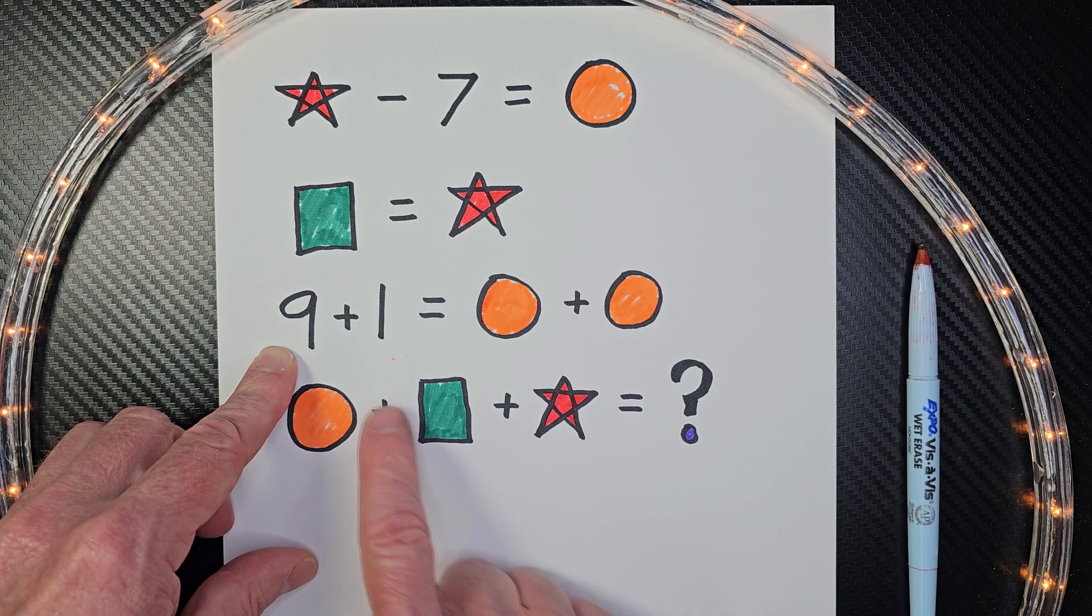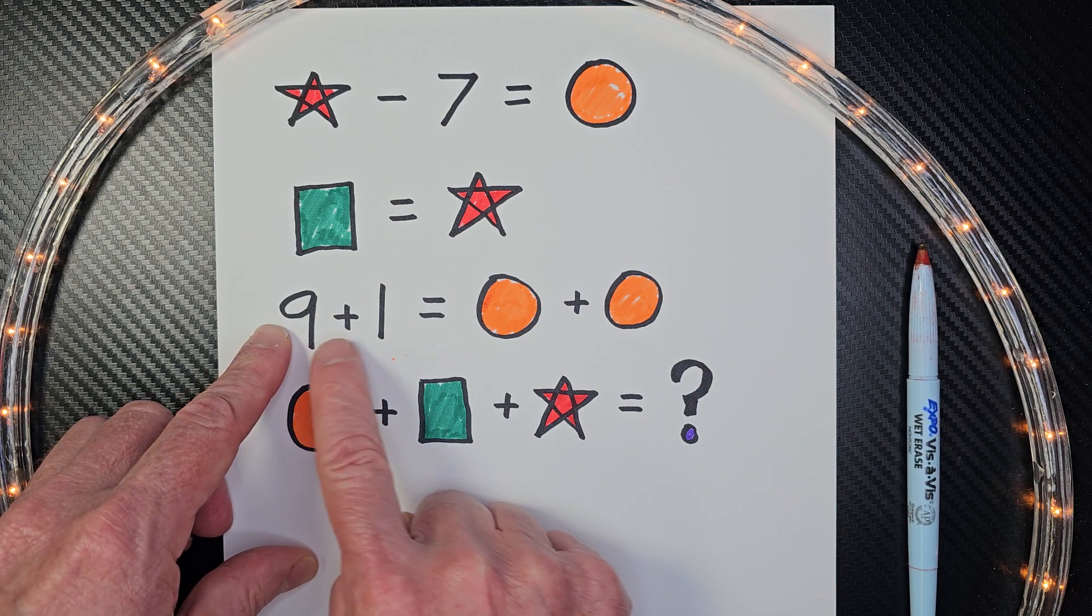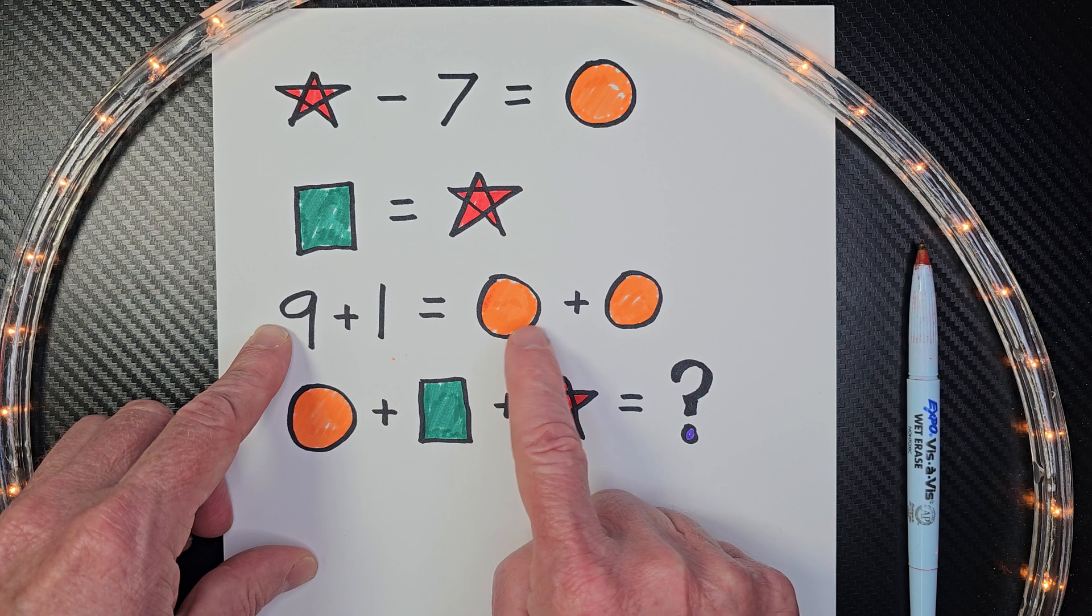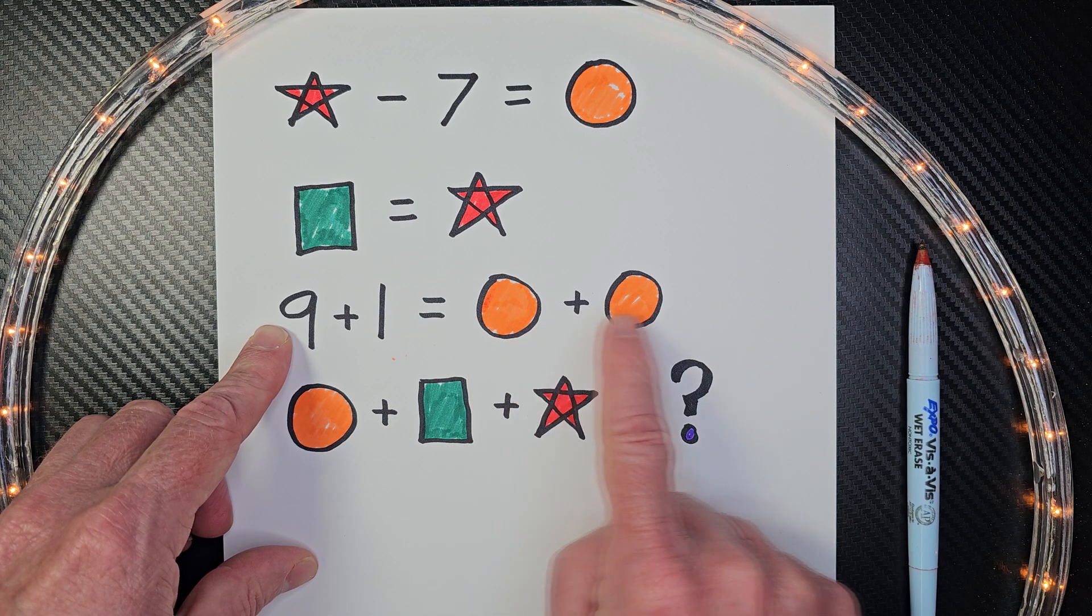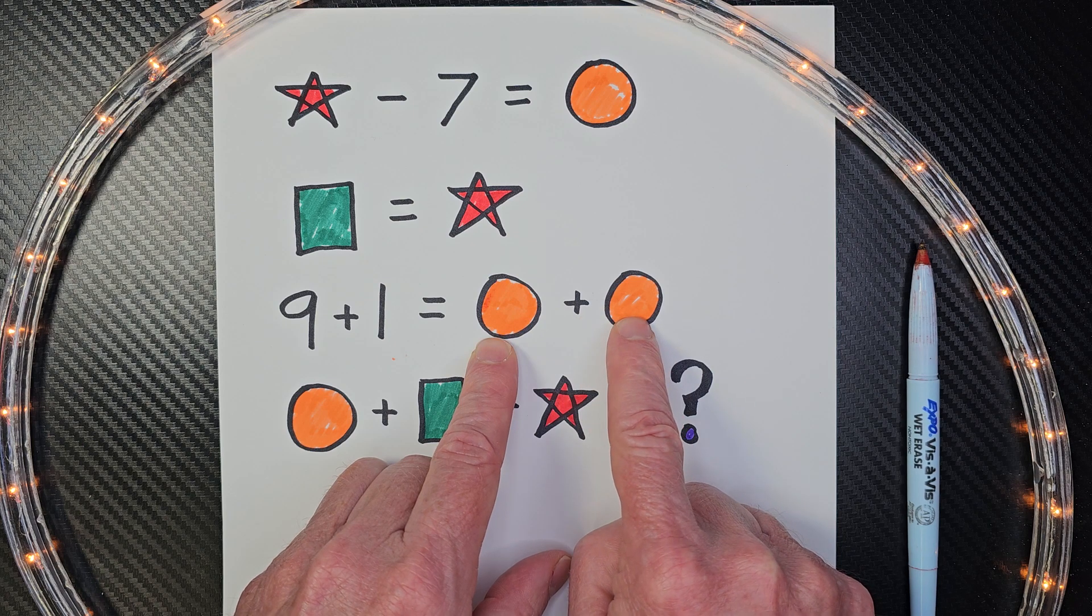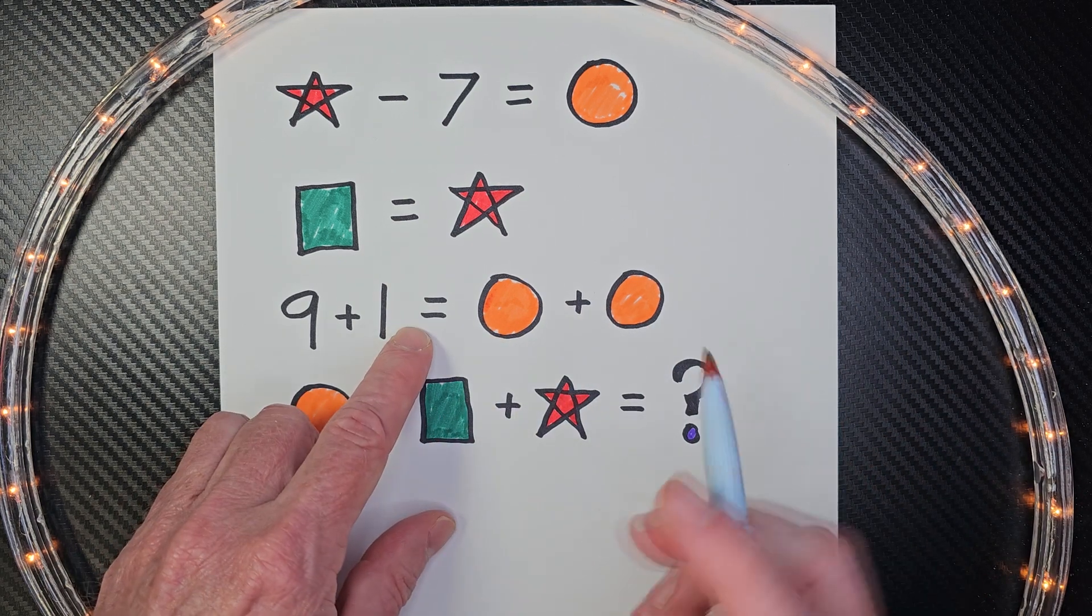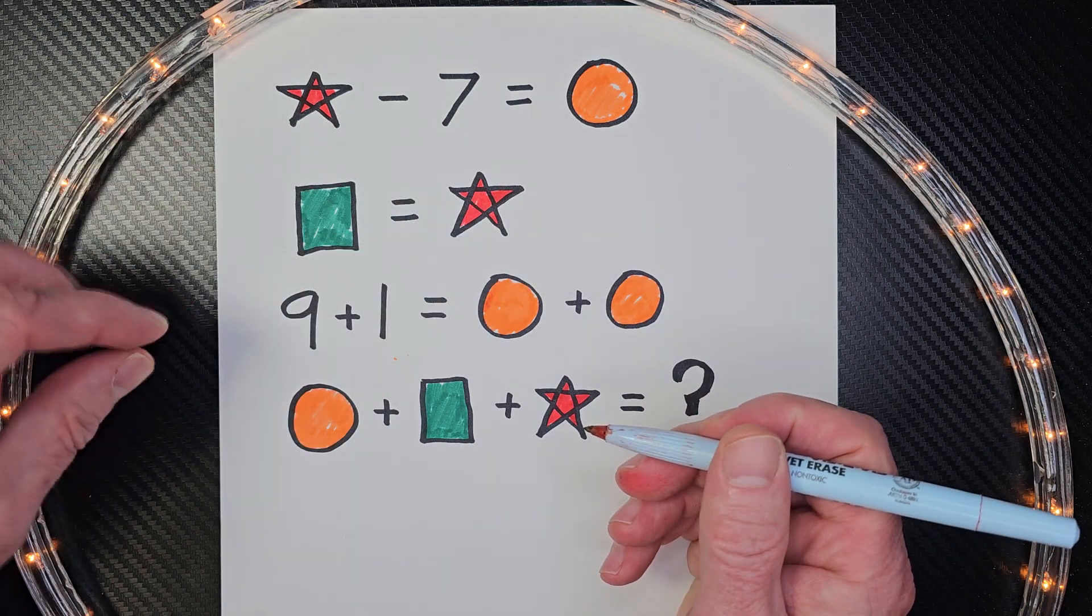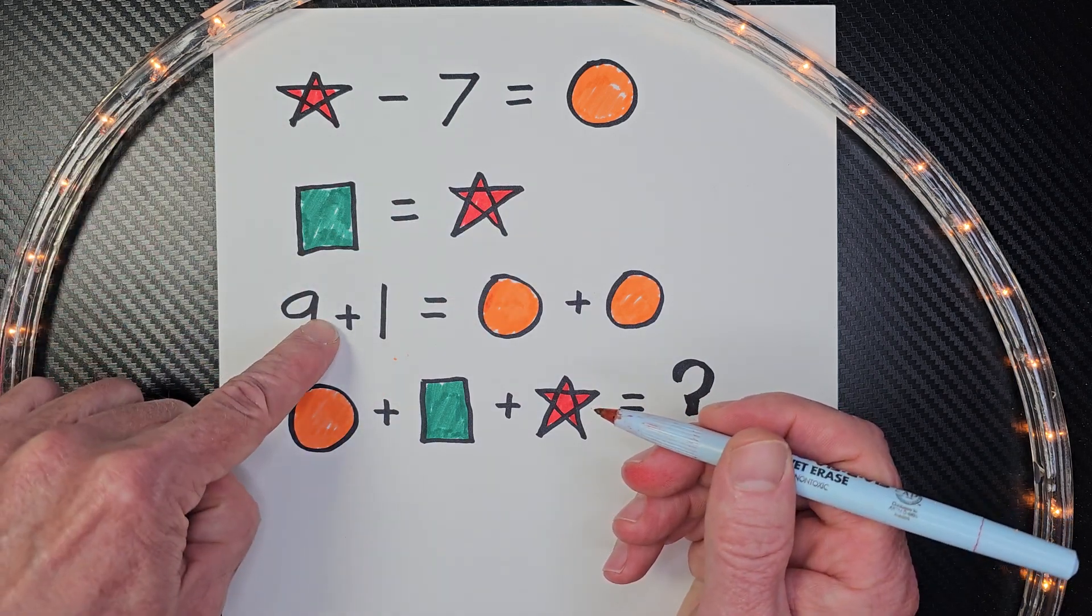Here we have 9 plus 1 equals, and then we have a circle and a circle. Remember the value of this is going to be the same as this one here. Taking a look at this equal sign, remember it's a balance act - it has to have the same value here and the same value there.